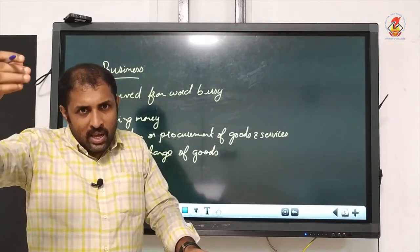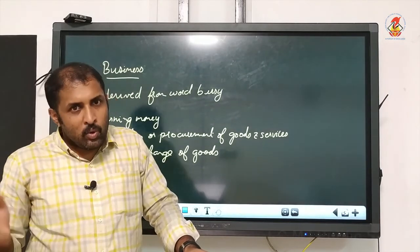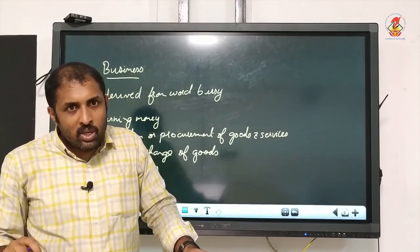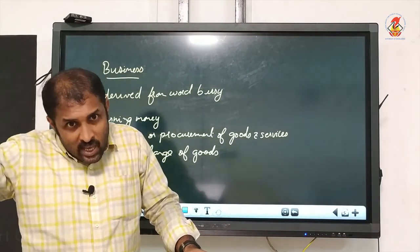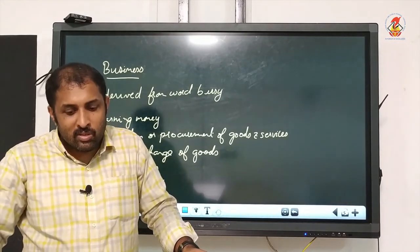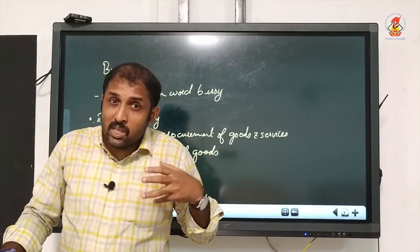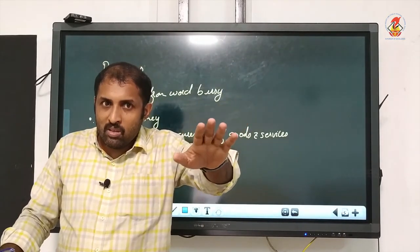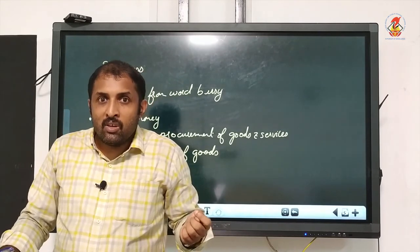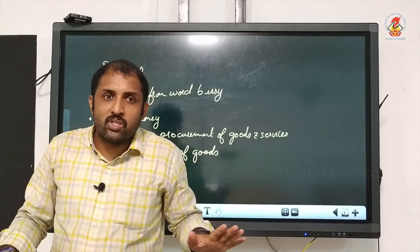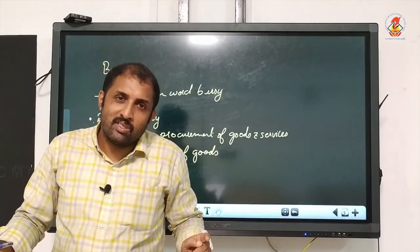So if an economic activity fulfills all these conditions — production or procurement of goods, selling or exchanging those goods for a value, done on a regular basis for earning something above expenses, with an element of risk and chance of loss — then such an activity can be termed as business.